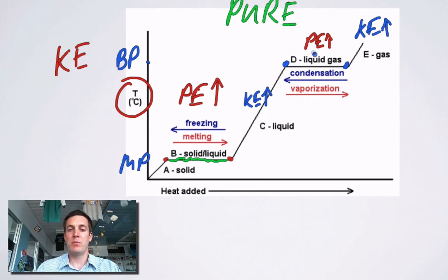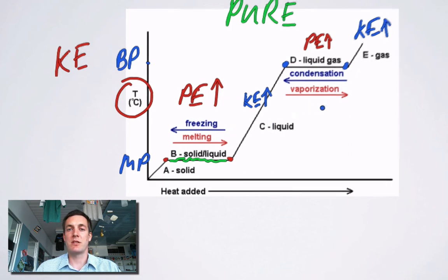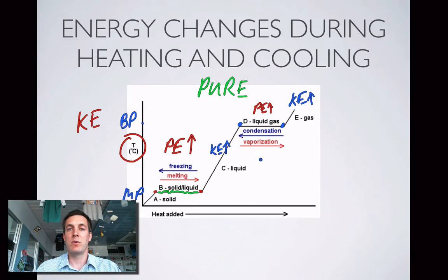Some important points to note on this graph: temperature remains constant at the boiling point and melting point of a pure substance — that is probably one of the most important things about that graph.